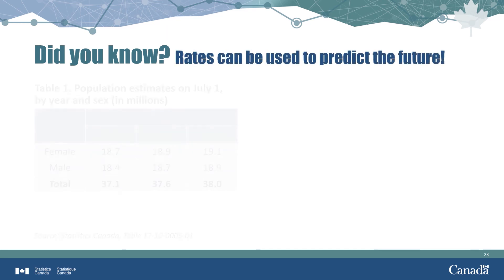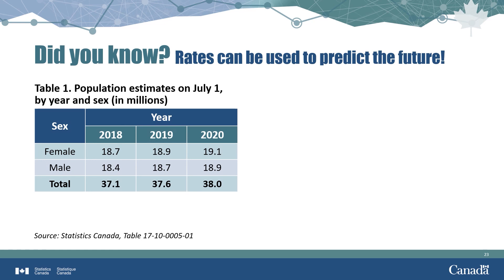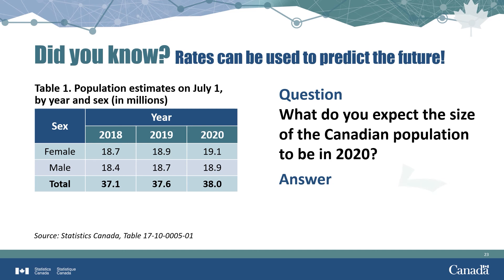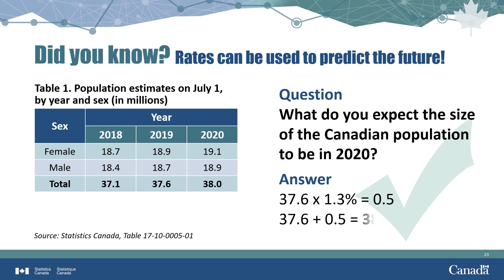Did you know that rates can also be used to predict the future? Table 1 shows the Canadian population was 38 million in 2020. If that data were not yet available, we could predict it by assuming the 2019–2020 growth rate would match the 2018–2019 rate of 1.3%. Applying 1.3% to the 2019 population of 37.6 million gives a predicted growth of 0.5 million, for a total of 38.1 million — very close to the actual estimate of 38 million.